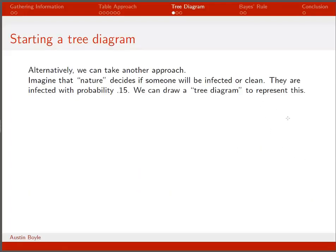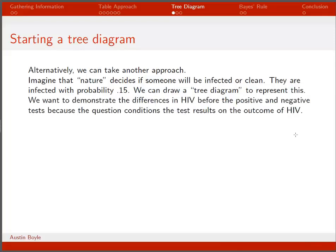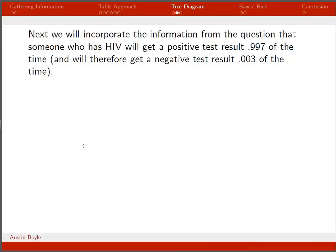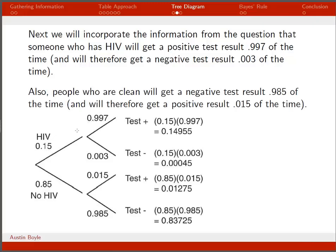There's another way to approach this problem: a tree diagram, which may be more intuitive for some people. We first assume that nature decides if you're infected — with probability 0.15 you get HIV, and with probability 0.85 you go along the no-HIV branch. If you have HIV, you get a positive test result 0.997 of the time, meaning a negative test occurs 0.003 of the time.